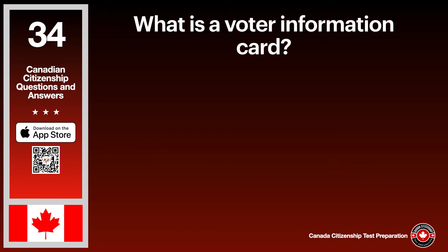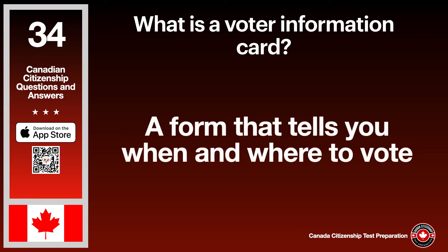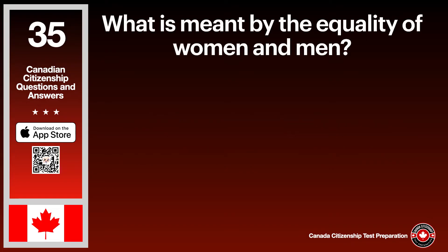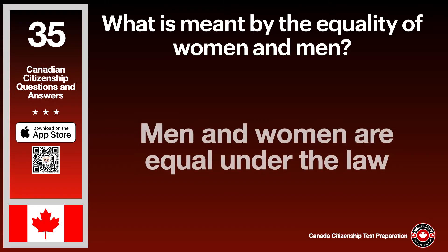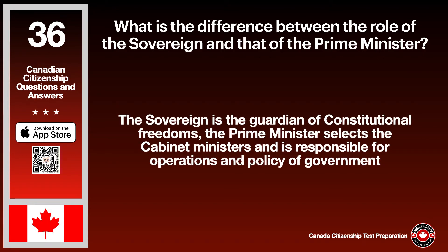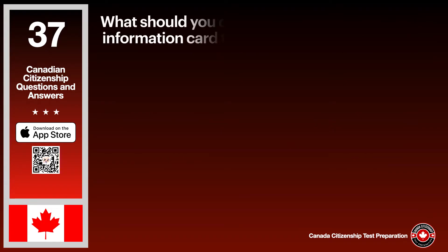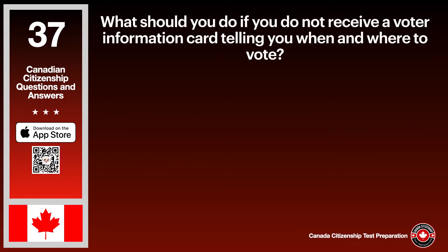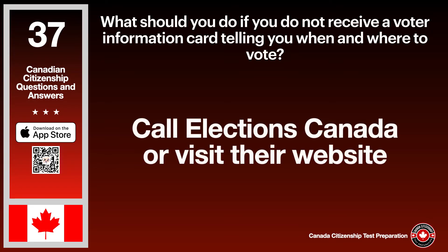What is a voter information card? The answer is a form that tells you when and where to vote. What is meant by the equality of women and men? The answer is men and women are equal under the law. What is the difference between the role of the sovereign and that of the prime minister? The answer is the sovereign is the guardian of constitutional freedoms; the prime minister selects cabinet ministers and is responsible for operations and policy of government.